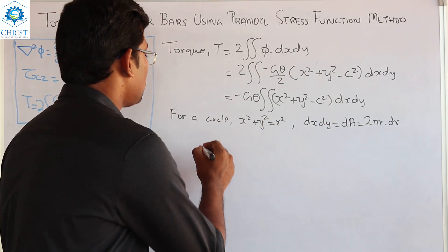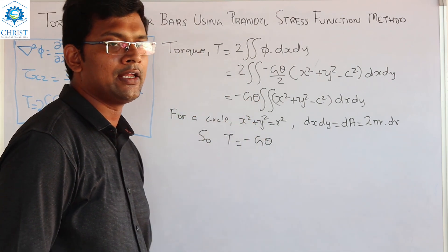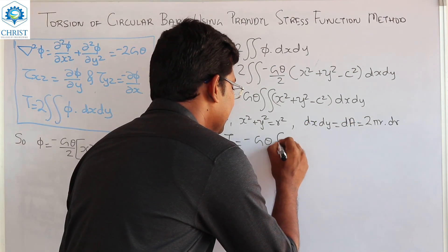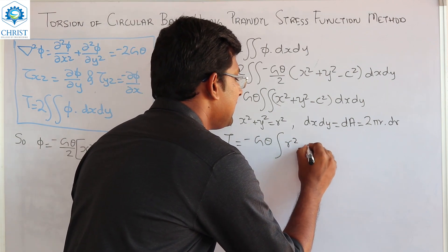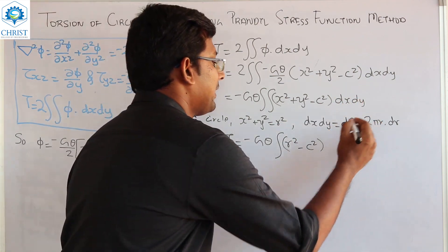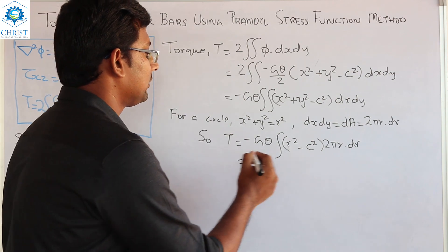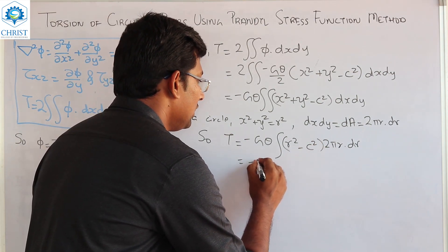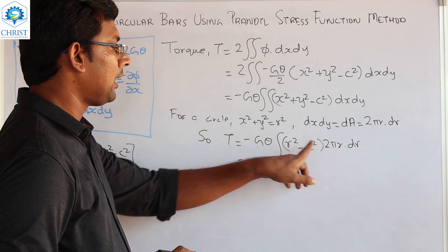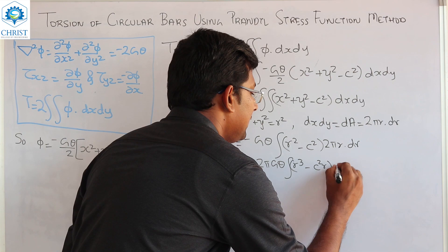The torque expression becomes T = −Gθ · integral of (r² − c²) · 2πr dr. So, T = −2πGθ · integral of (r³ − c²·r) dr. The integration limits are 0 to capital R, where R is the radius of the circle. So, we integrate from 0 to R.